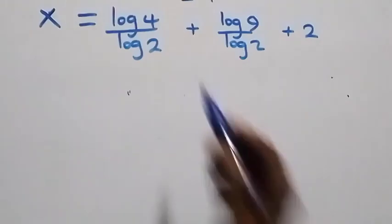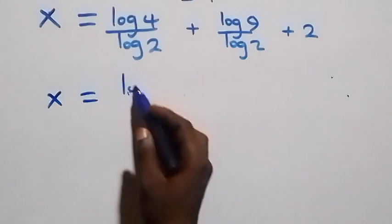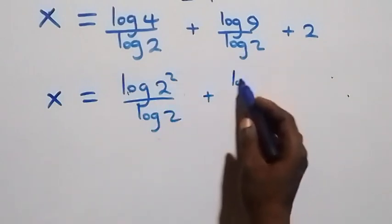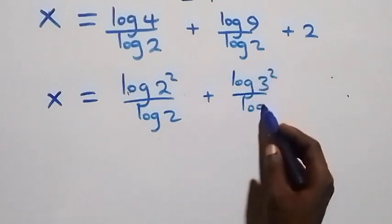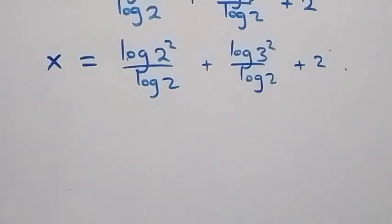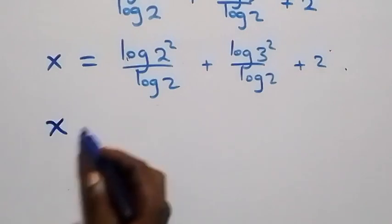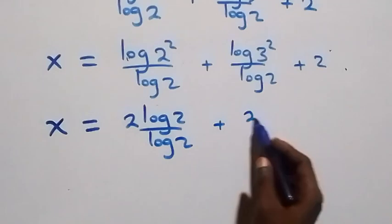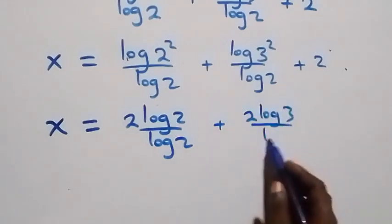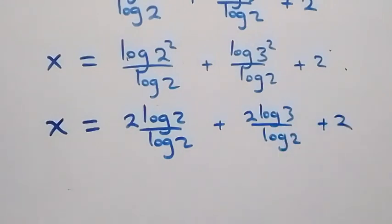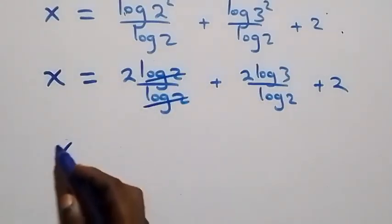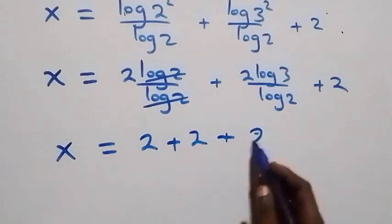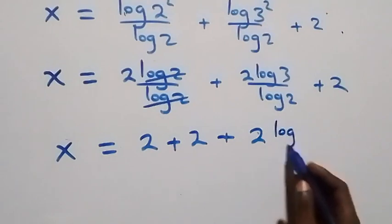We write 4 as 2 squared and 9 as 3 squared. So x equals log 2 squared over log 2 plus log 3 squared over log 2 plus 2. Applying the power rule, x equals 2 log 2 over log 2 plus 2 log 3 over log 2 plus 2. Log 2 cancels, giving x equals 2 plus 2 log 3 over log 2 plus 2.